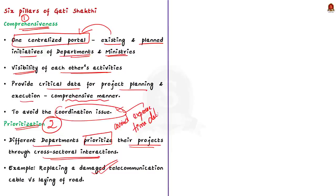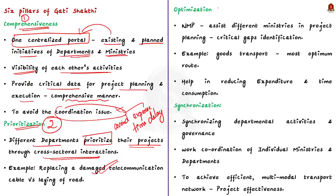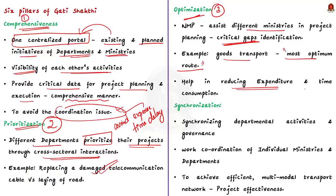The third pillar is optimization. The National Master Plan will assist different ministries in planning for projects after identification of critical gaps. For example, in the transportation of goods from one place to another, the plan will help in selecting the most optimum route, thereby reducing expenditure and time consumption of that transportation project.